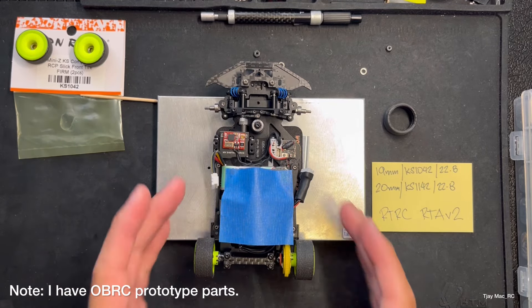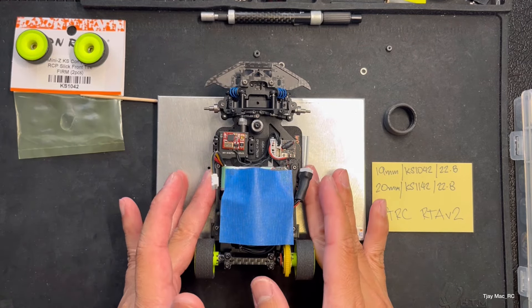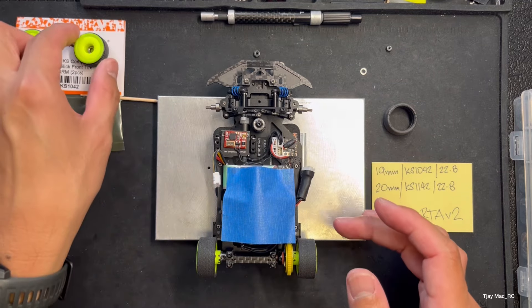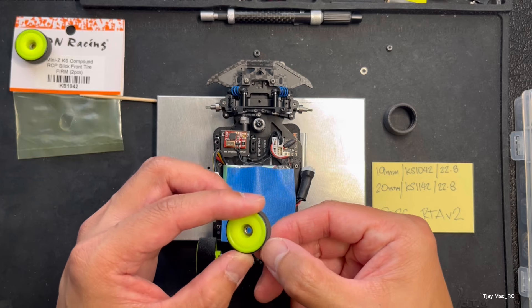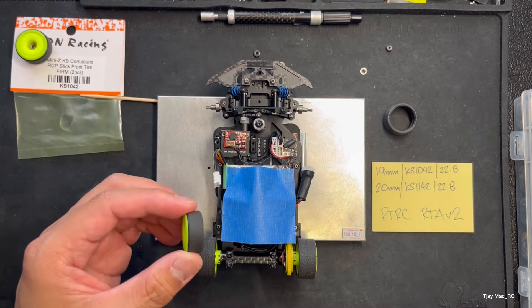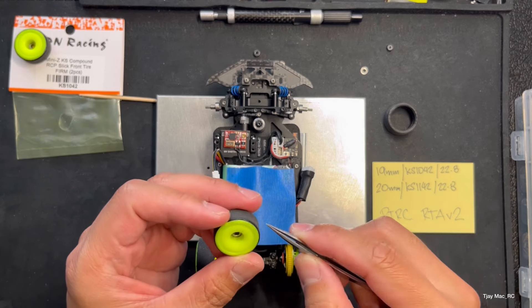If you're having traction roll issues with the RTRC RTA V2, it's probably best to have your sidewall glued all the way to the top. By that I mean the top of the sidewall.